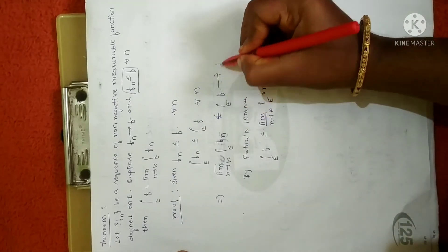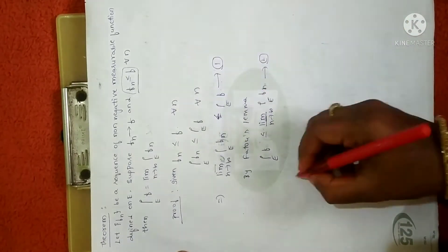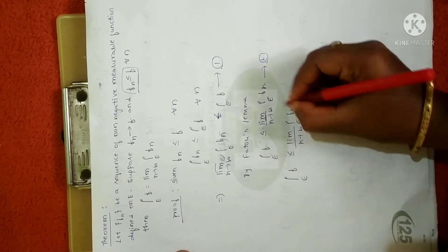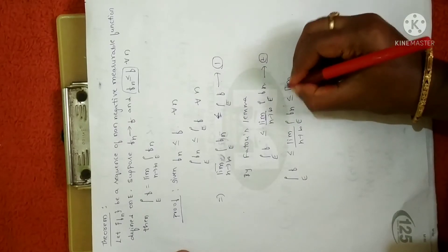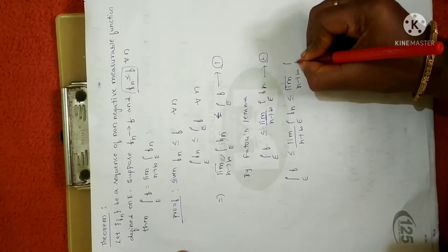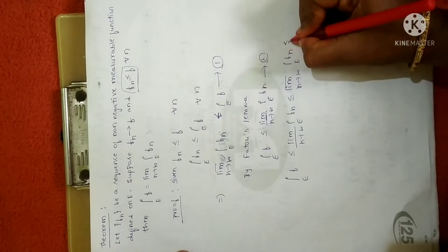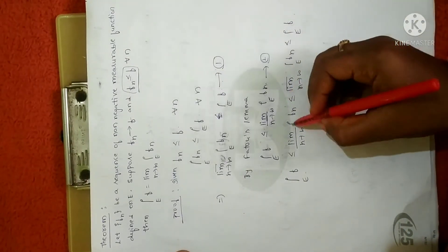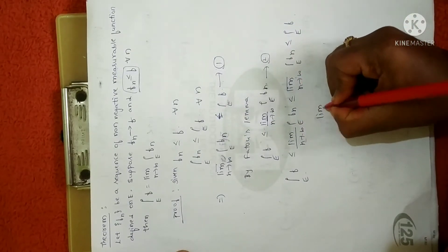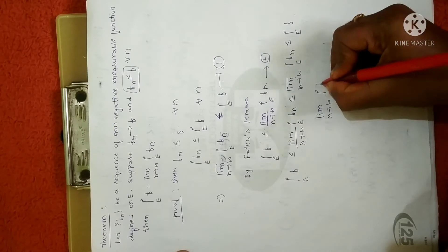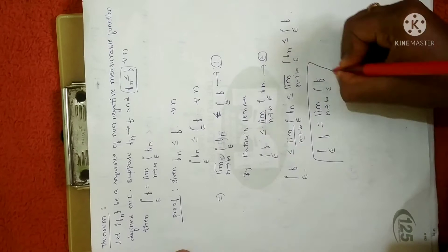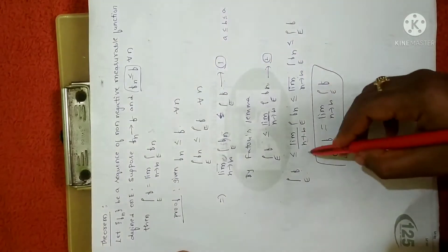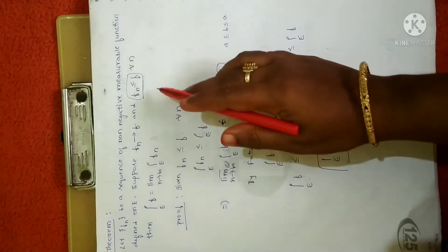Let us take the first result as equation 1 and Fatou's lemma as equation 2. From equations 1 and 2 we can write: the integral over E of f is less than or equal to the limit infimum of the integral over E of fn, which is again less than or equal to the limit supremum — since limit infimum is always less than or equal to limit supremum — and which is less than or equal to the integral over E of f. So it is like a ≤ b ≤ a, meaning a equals b. Therefore the limit as n tends to infinity of the integral over E of fn equals the integral over E of f.